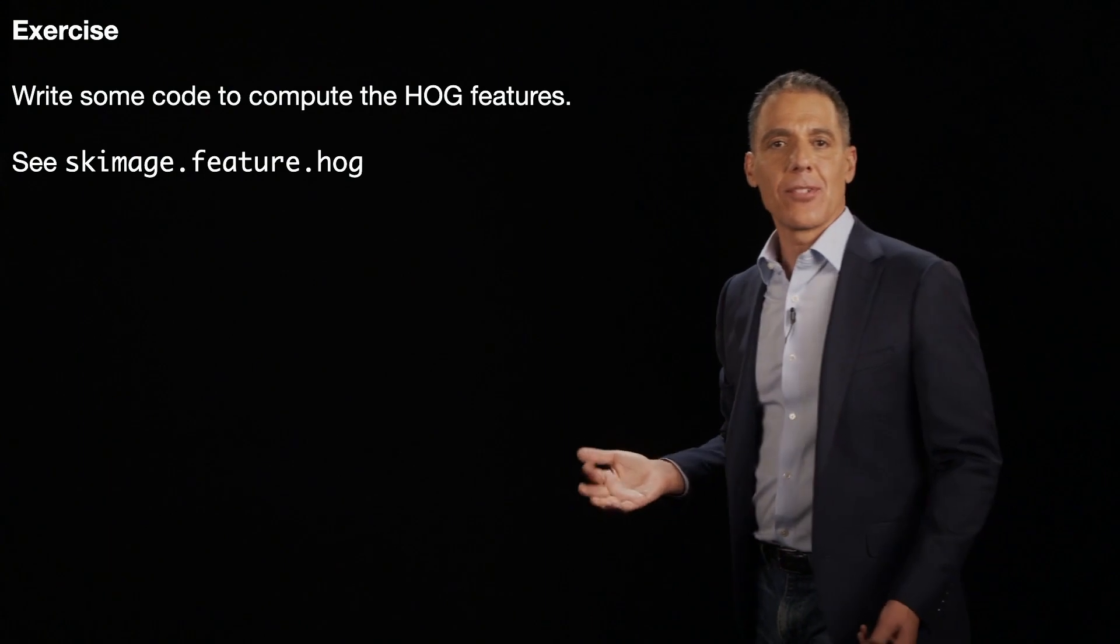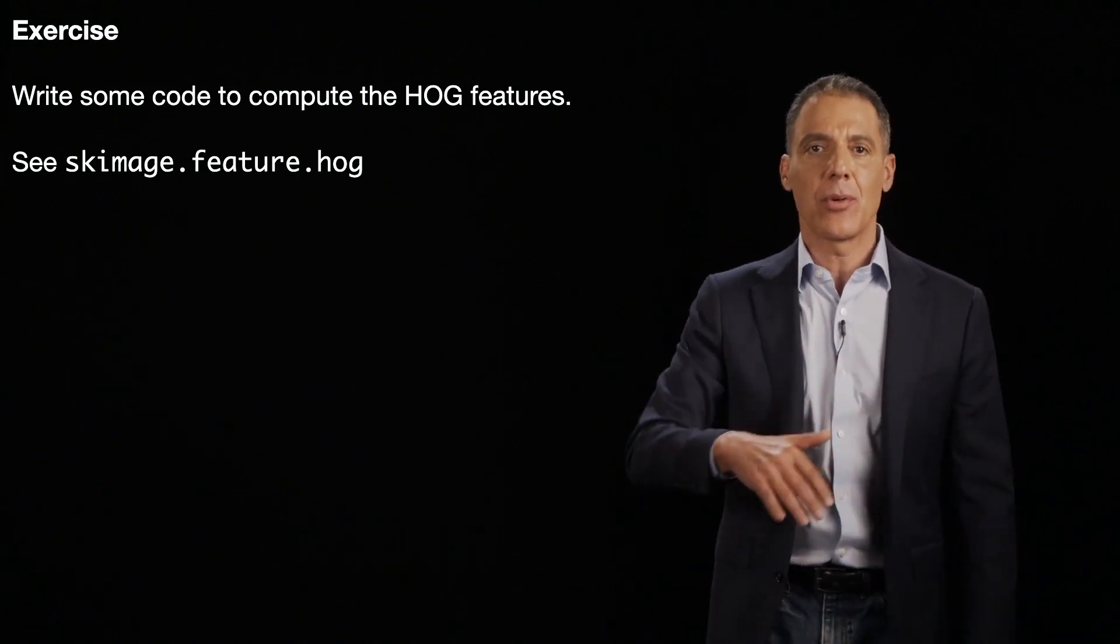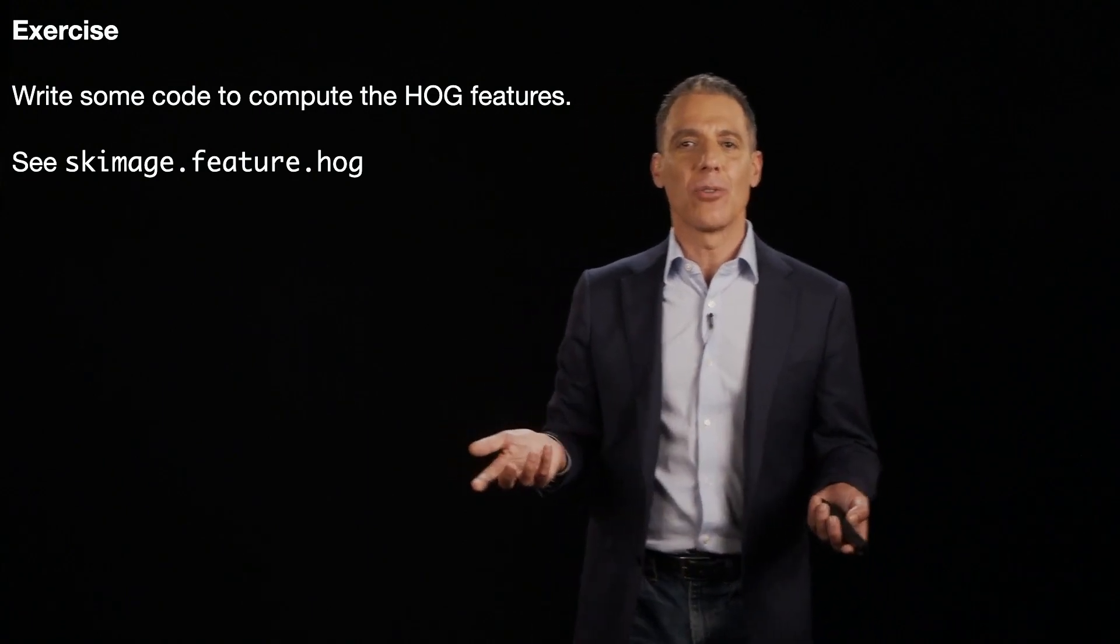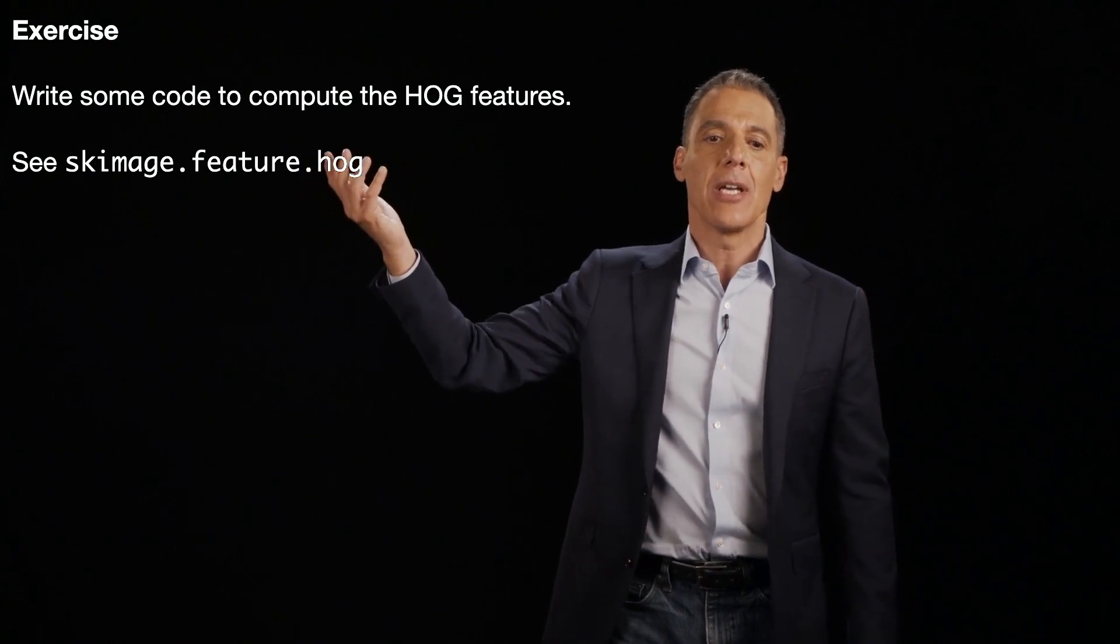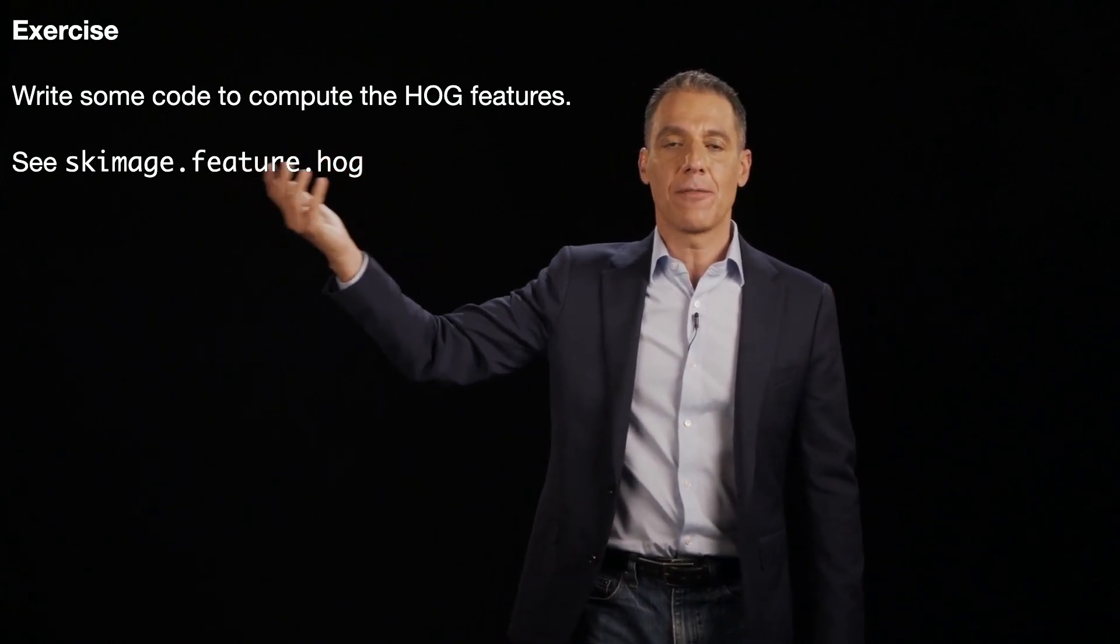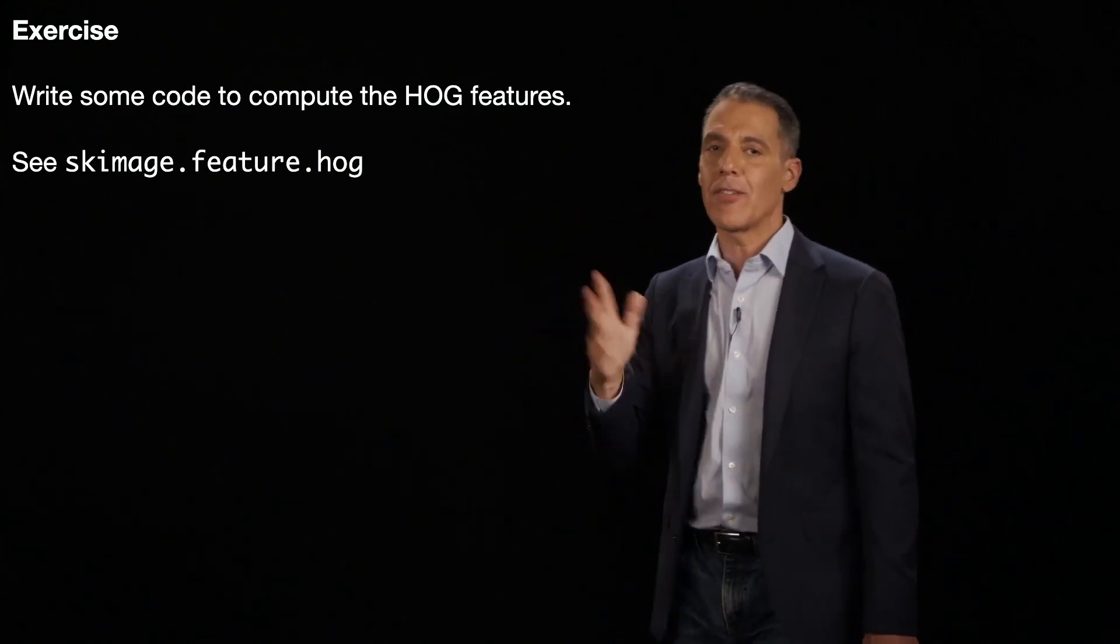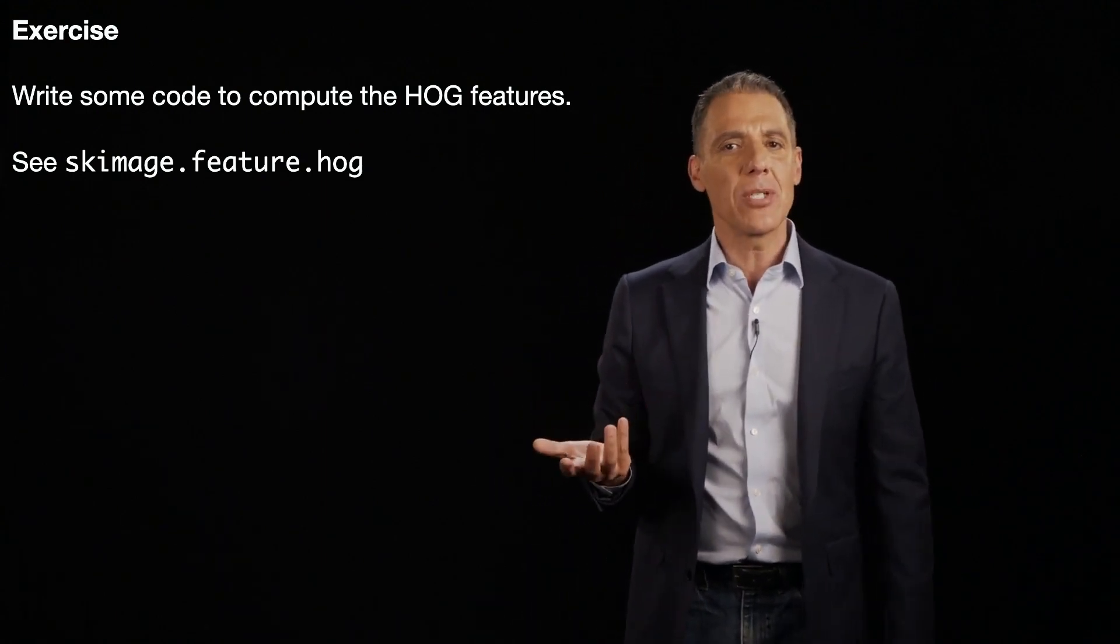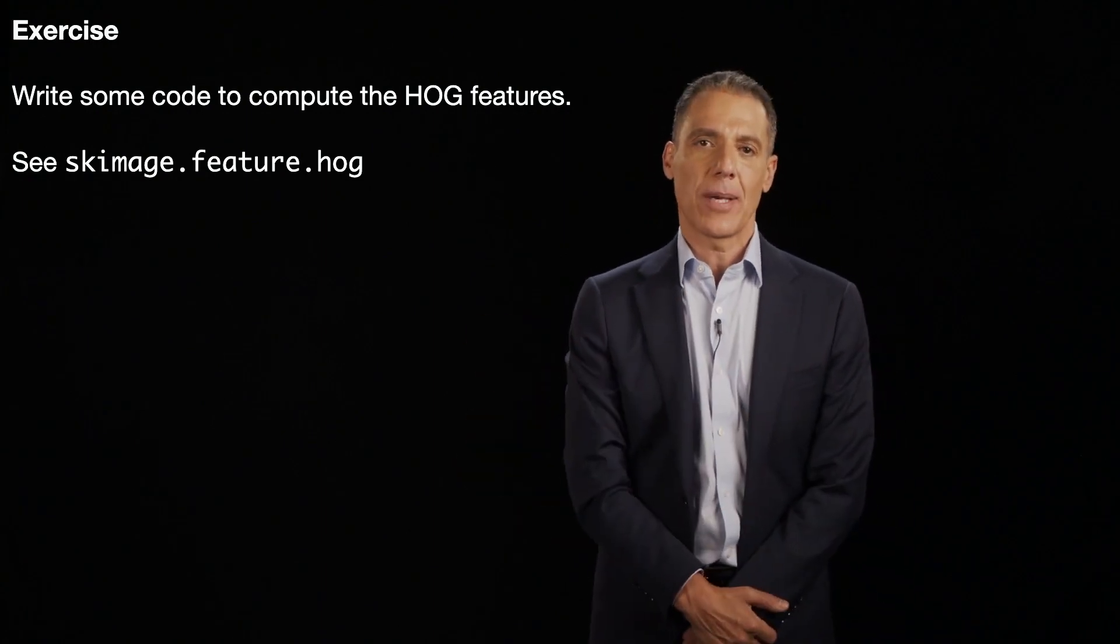So I want you to implement this. Now, I could have you implement the whole thing top to bottom. So compute the gradient. Compute the derivatives. Compute the gradients. Compute the orientation. Write a loop to go through everything. And really, there's not much to learn there that we haven't already done. So instead, what I'm going to have you do is just use the built-in skimage.feature.hog. So there's a built-in function that will compute the HOG for you. Take your favorite image. It can be the Einstein image. It can be whatever you want. And compute it. And actually play around with the images to get some intuition as to what's happening in these representations. And then when we come back, I'll show you my solution.